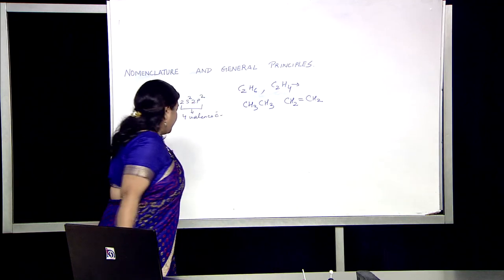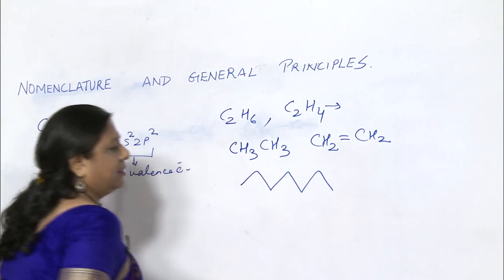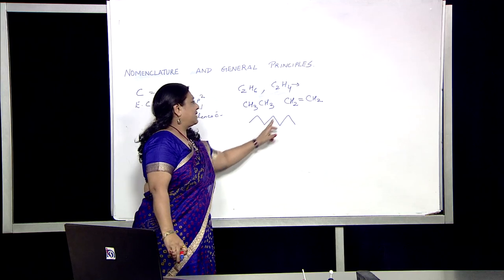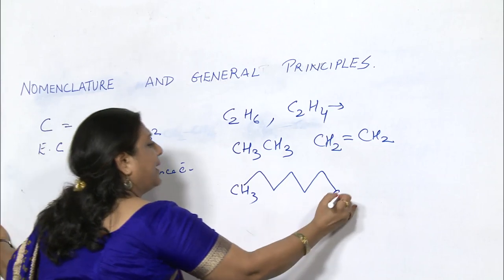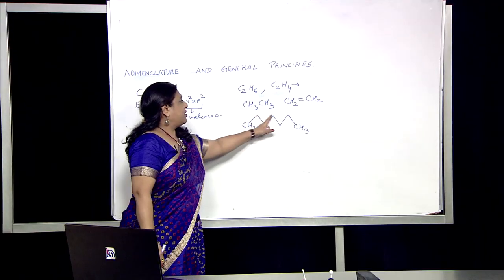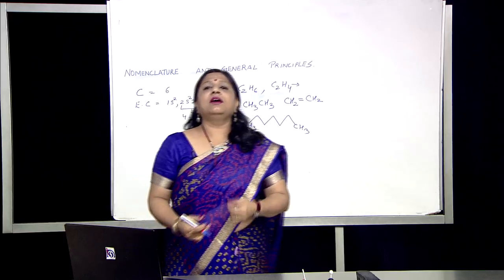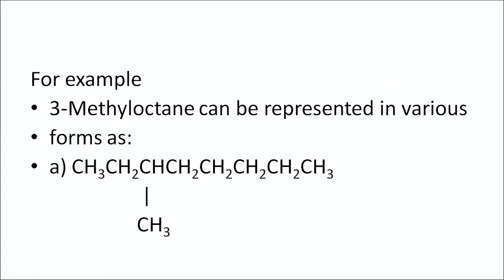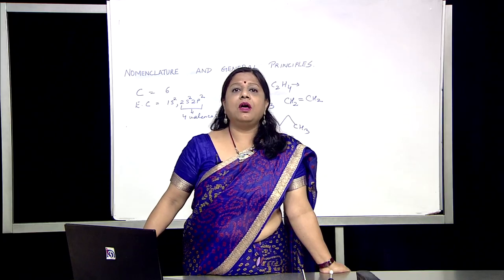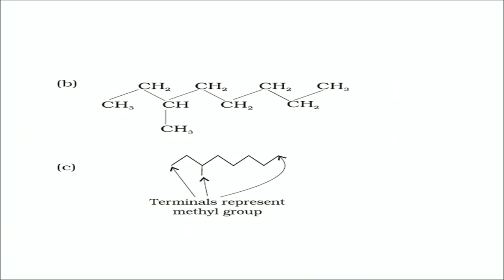Another form is the bond-line formula, where you represent the molecule in a zigzag manner. When you represent the molecule in a zigzag manner, you are not showing any of the atoms — it is just lines. The terminal positions are always occupied by CH3 and the peaks are occupied by carbon. From these structures you can identify the name of the compound. For example, 3-methyloctane can be represented in various forms: as CH3-CH2-CH with a methyl group, with eight carbon atoms in a straight chain. The bond-line formula shows CH3 groups at terminal positions and carbon at the peaks.